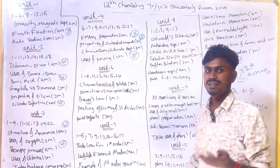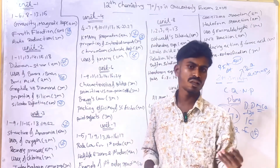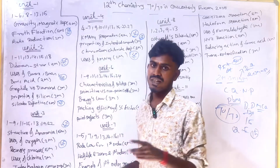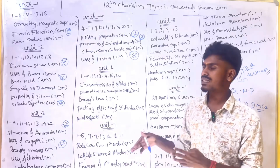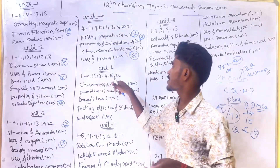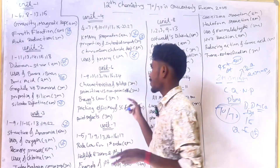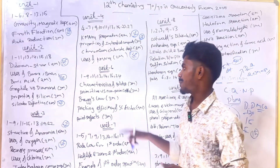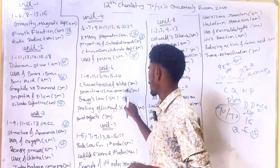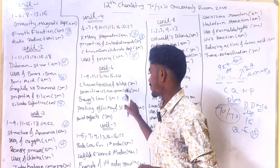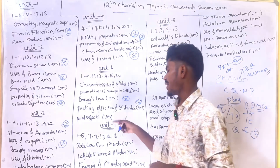Unit 6 — Solid State: Schottky defects, Frenkel defect, and Packing Efficiency calculation are very important. FCC and BCC structure diagrams — questions 1, 2, 9, 11, 13, 14, 16, and 24 are important. Frenkel defect is very very important. Characteristics of solids is a very very important 3 mark question.